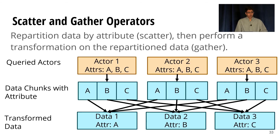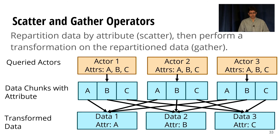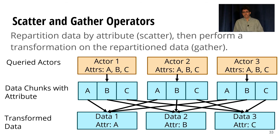We can also look at a couple more complex operators like scatter and gather, where scatter repartitions data by attribute and gather performs a transformation on the repartitioned data. These can be used for more complicated collective operations like a shuffle join or a reduce-by-key.